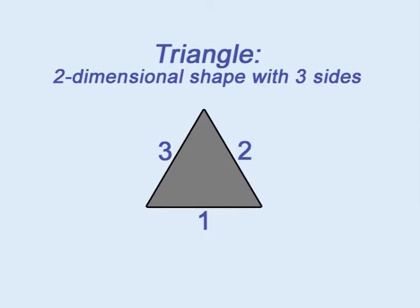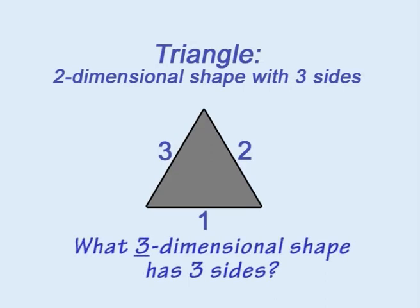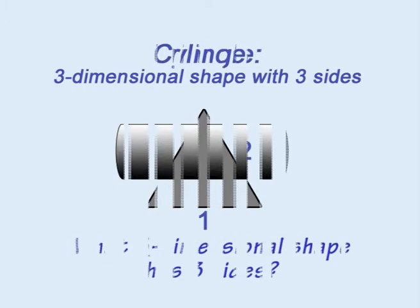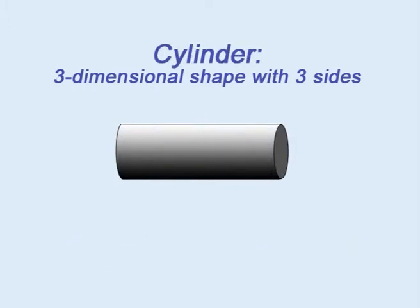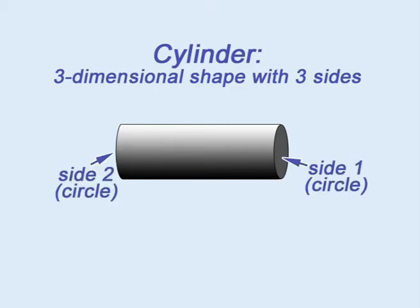The triangle is a two-dimensional shape with three straight sides. What three-dimensional shape has three sides? Actually, it is a cylinder, which doesn't look triangular at all. Instead, it has two circular bases and a third curved surface, or barrel, running along its length.